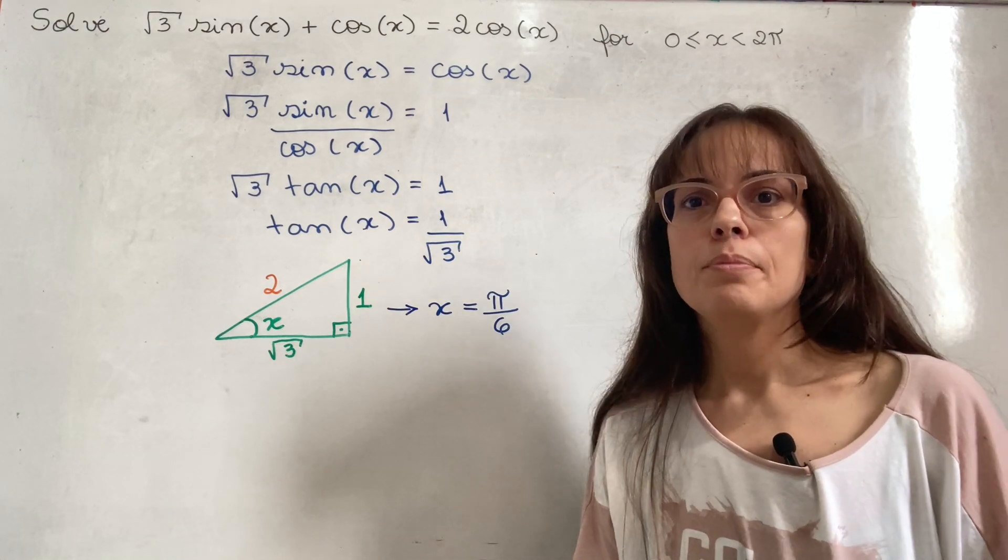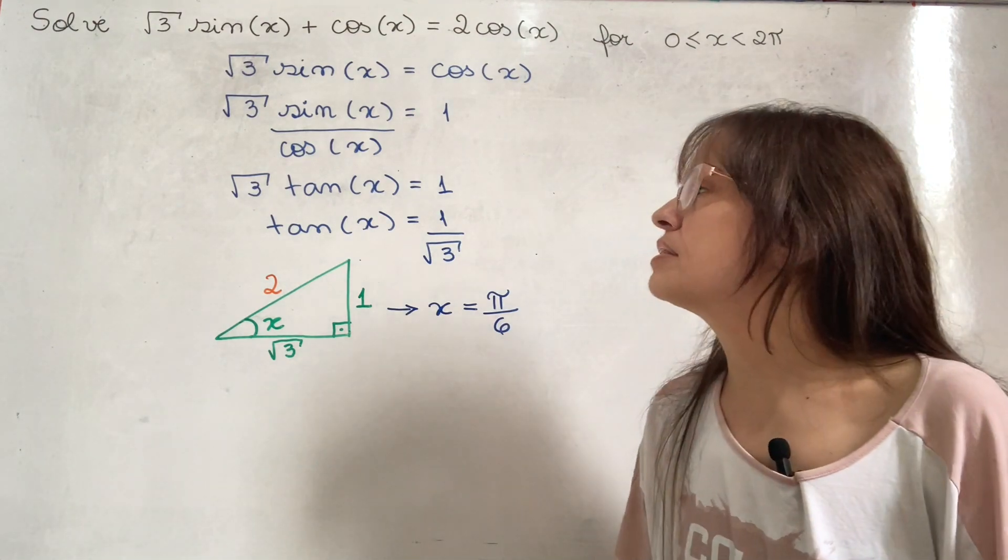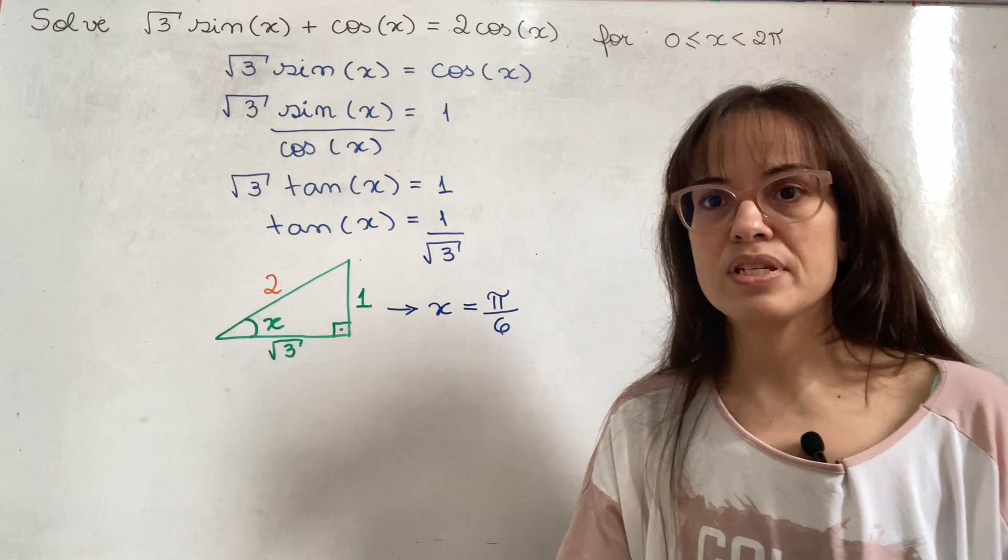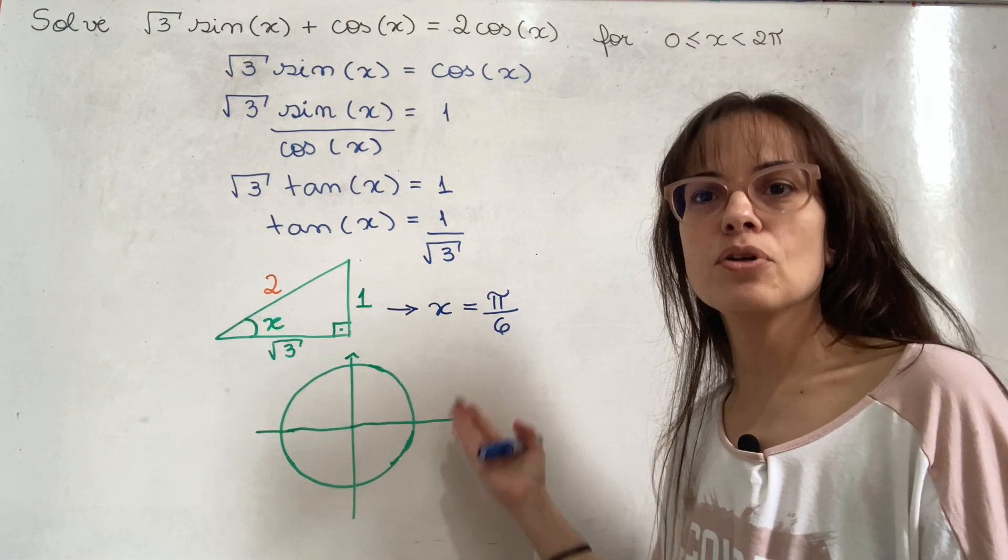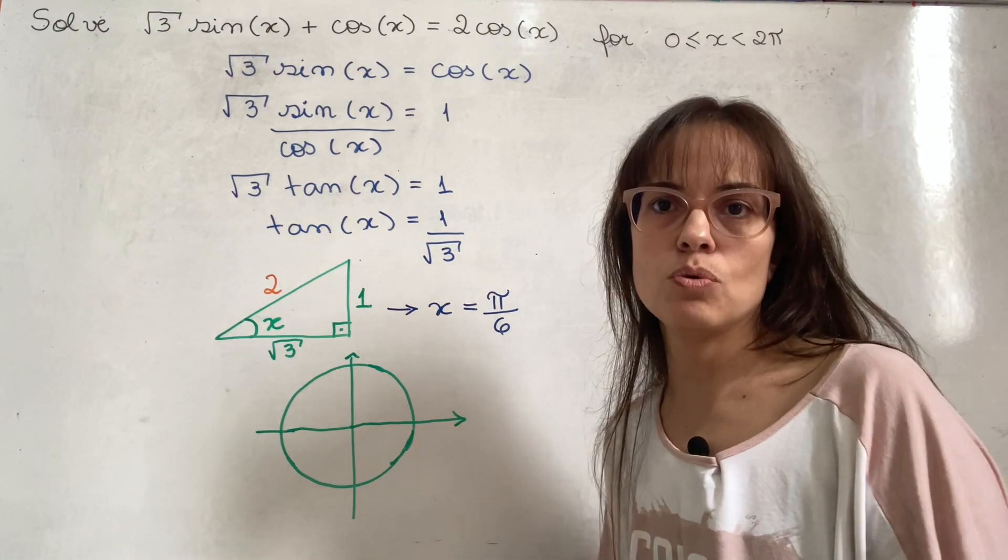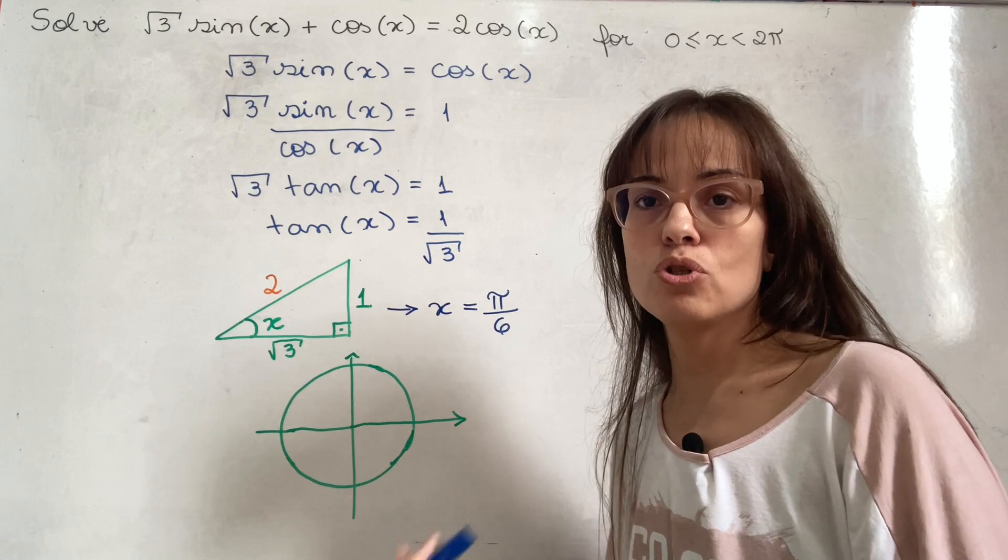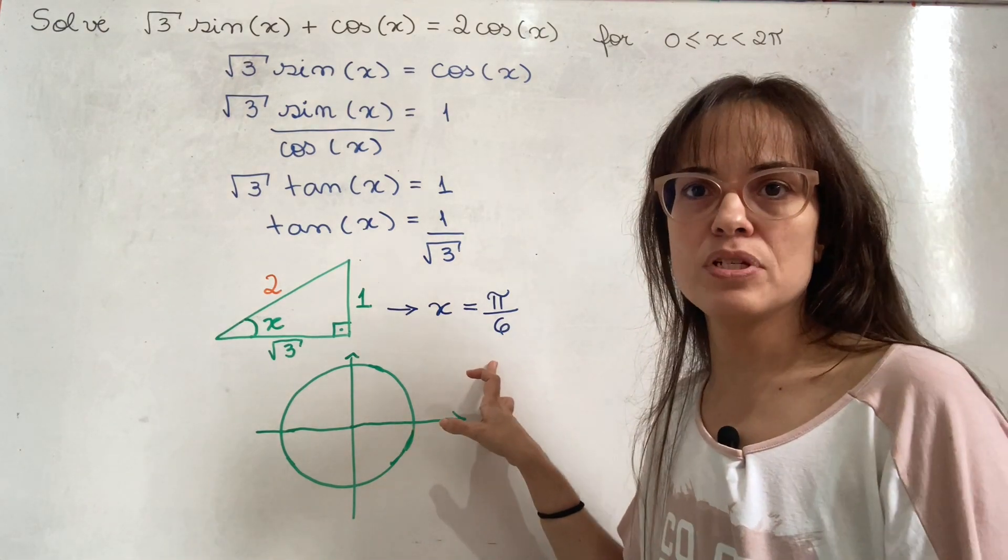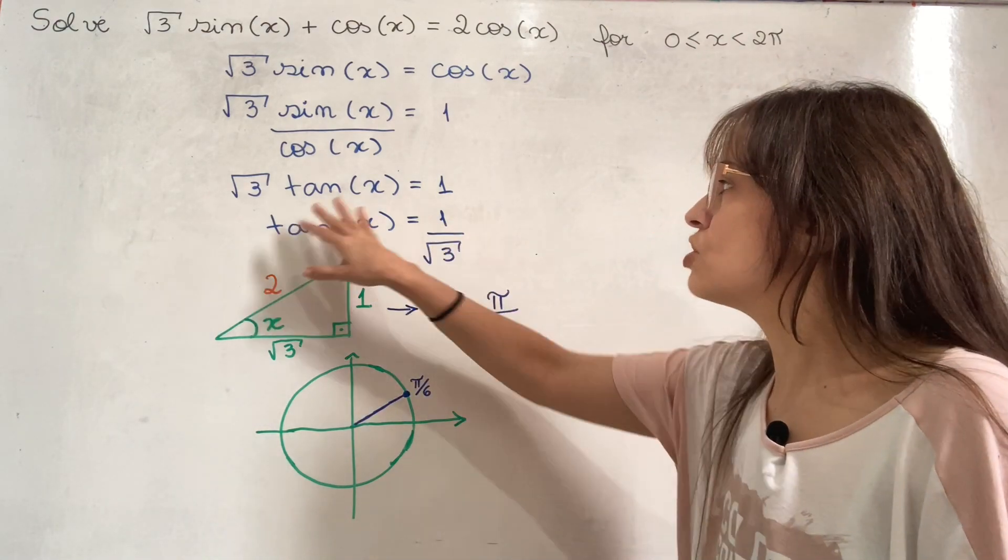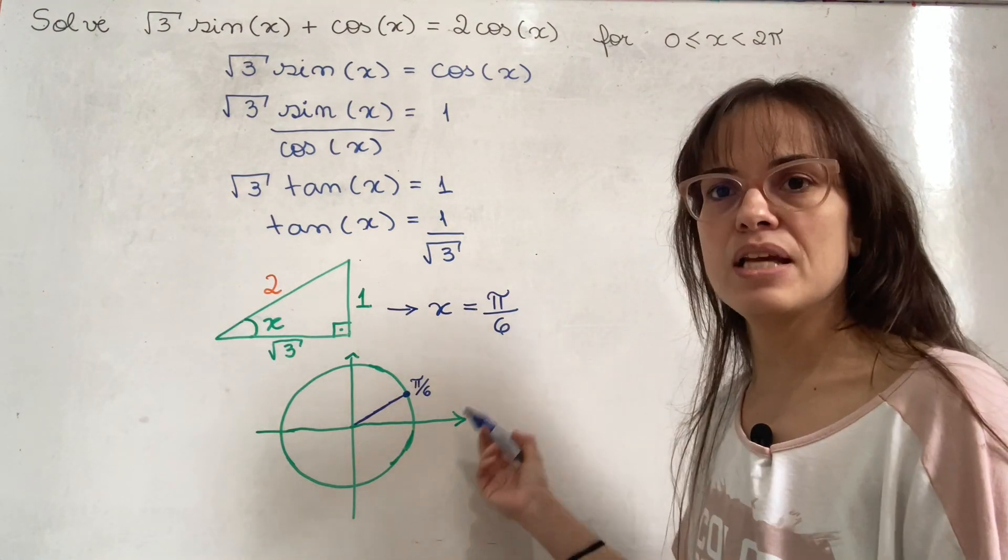But the problem is not over because this is just one answer and there might be more. Every time that they ask you to solve an equation, it's to give all possible solutions. And in order to do that, I'm going to draw a second picture. So this time I'm drawing a circle instead of a triangle. This is the unit circle and the domain that the question is asking about is from 0 to 2π. So he wants to go around the whole circle once looking for solutions to the equation. We've already found one π over 6 which is in the first quadrant and the information we had was about the tangent. So the tangent has to be the same. What other angles in the circle can also have the same tangent as π over 6?